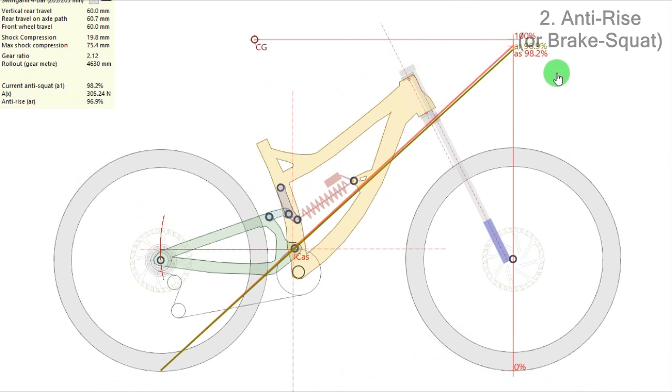...you have here an anti-rise about 97%, the green line, crossing the contact point at the wheel and crossing also the main pivot. Green line.